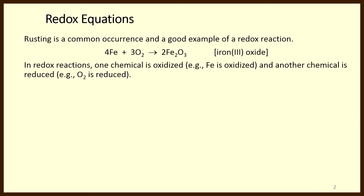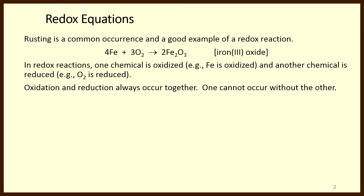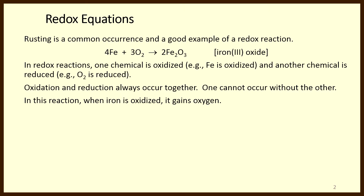In redox reactions, one chemical is oxidized — in this case, iron is oxidized. And another chemical is reduced — in this case, oxygen is reduced. Oxidation and reduction always occur together; one cannot occur without the other. In this reaction, when iron is oxidized, it gains oxygen.